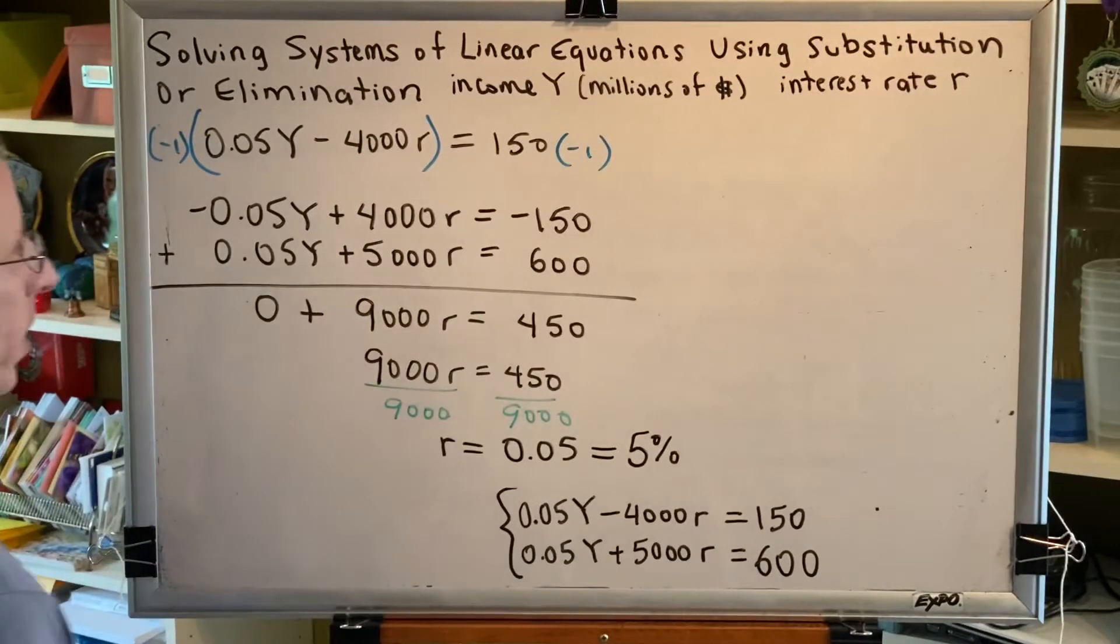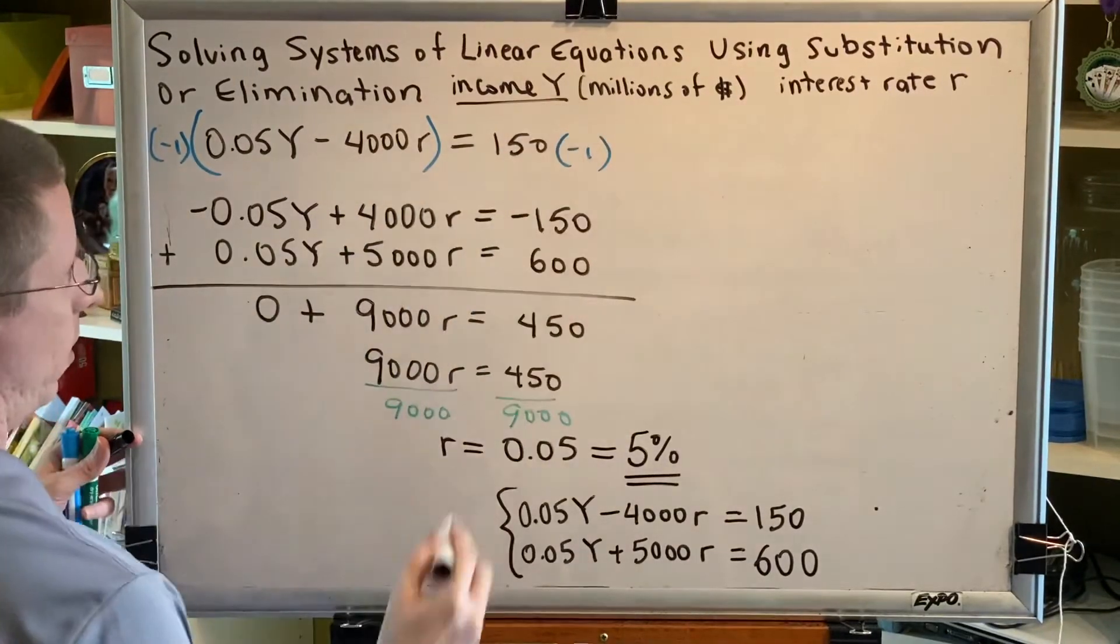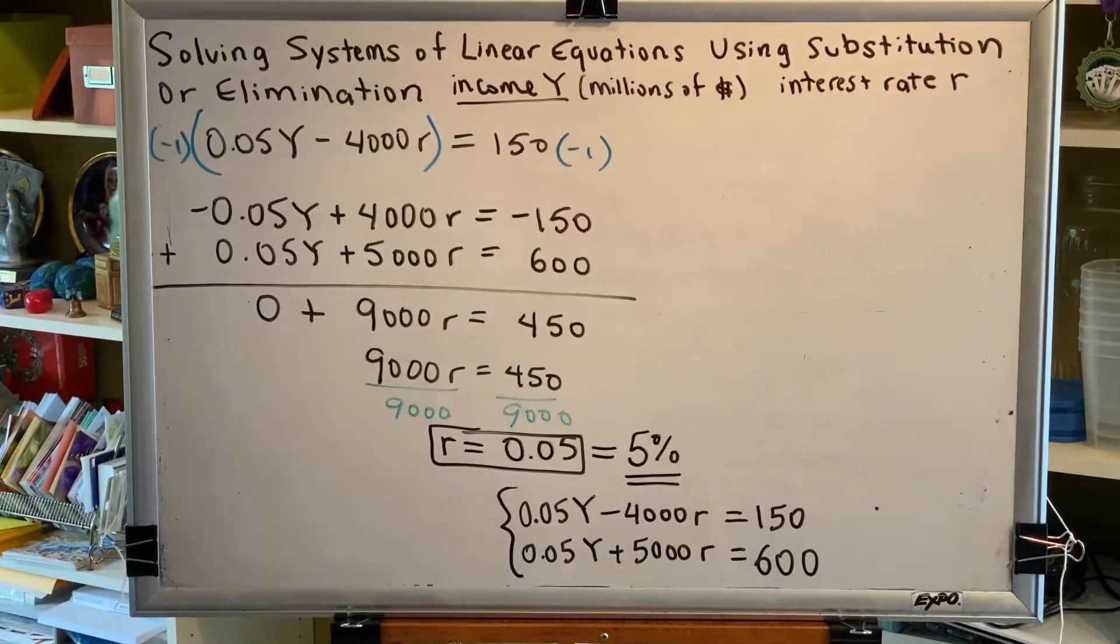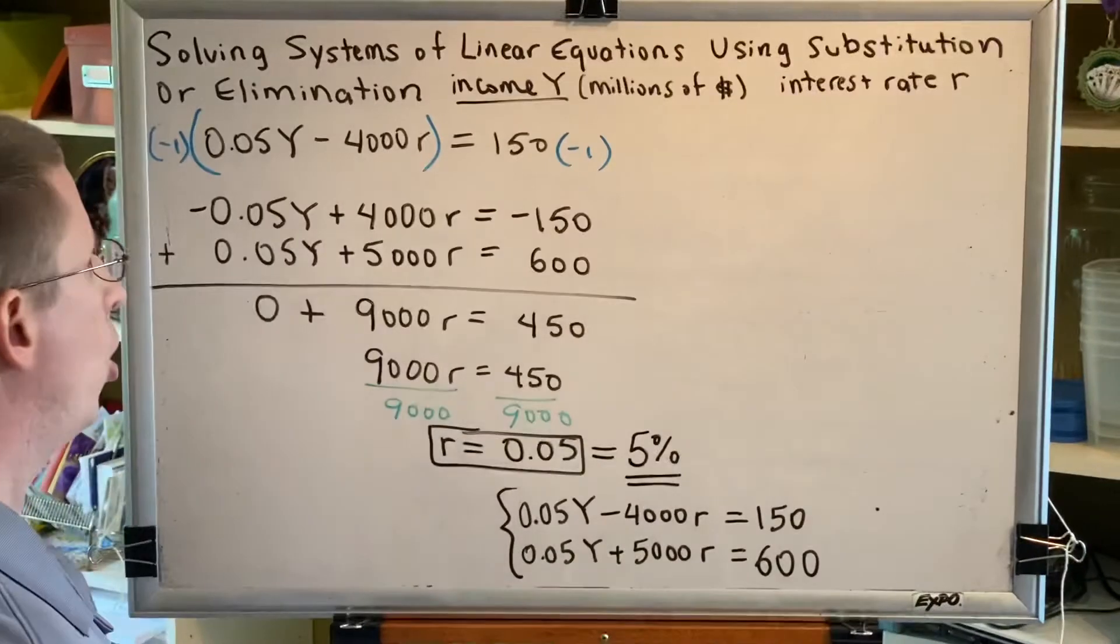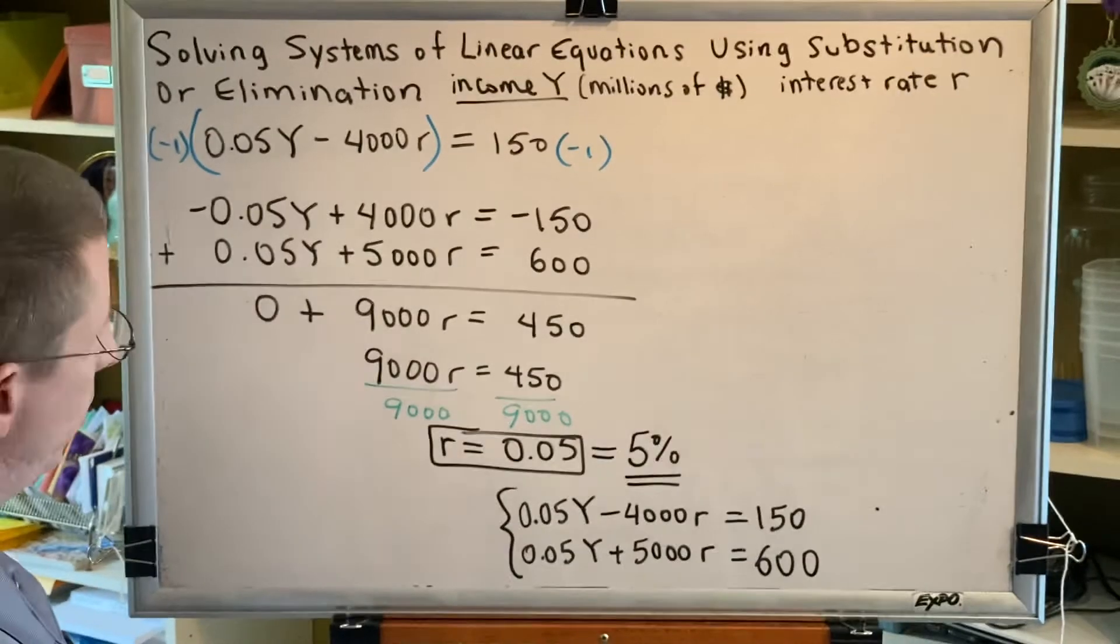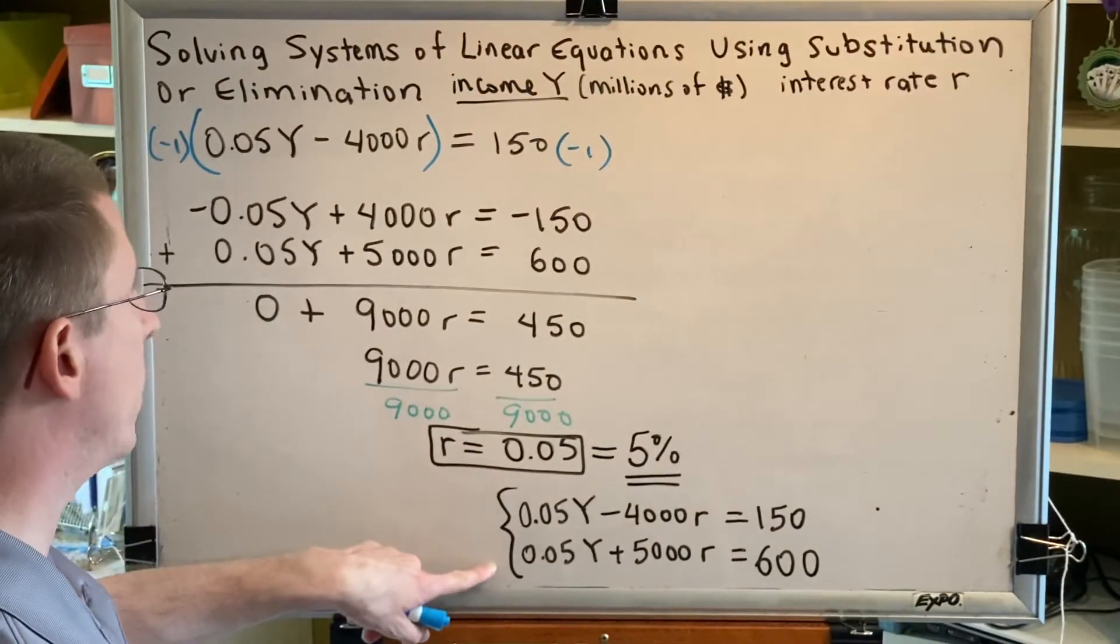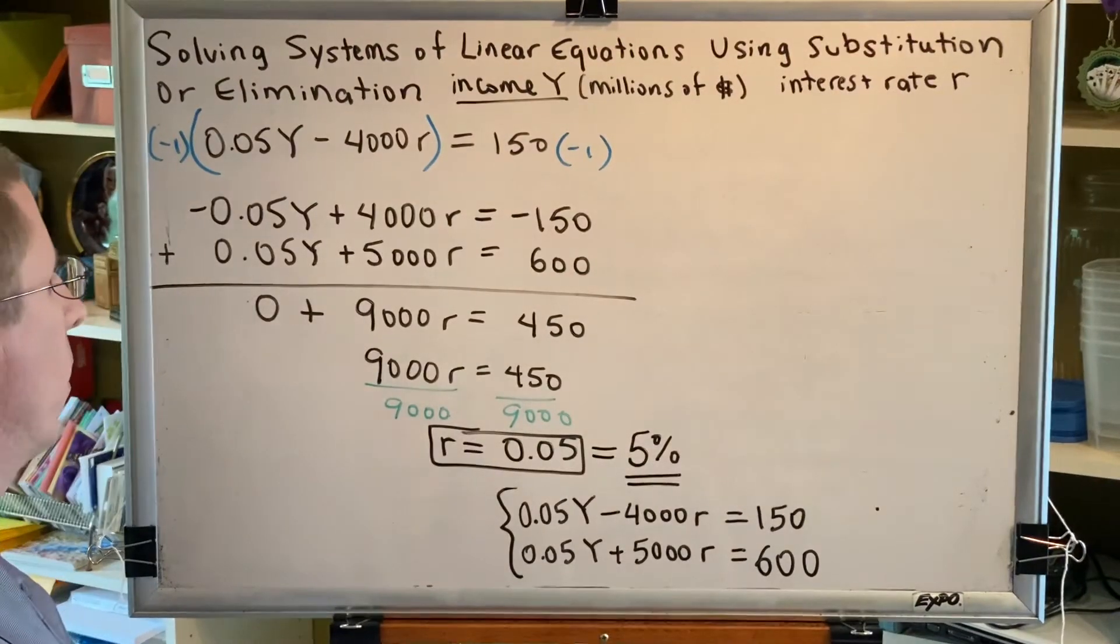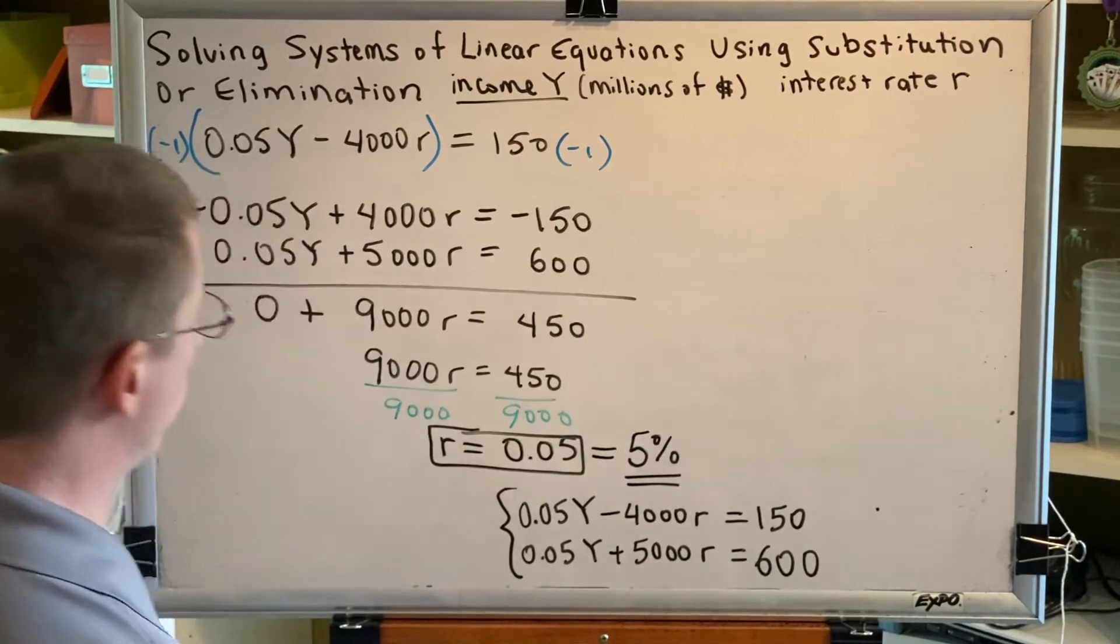Okay, so now we know the interest rate is 5%, but we still need to discover the income. So we're going to use the decimal version of our answer and plug in to one of our equations. Which equation should we choose? Well, we recommend using the smallest numbers with the fewest negatives. The top one has the smallest numbers, but includes a negative. The bottom one has some larger numbers, and no negatives. It's really a toss up as to which one is better. But in this particular instance, I'm going to recommend that we use the bottom equation to plug into.